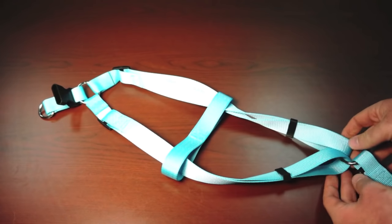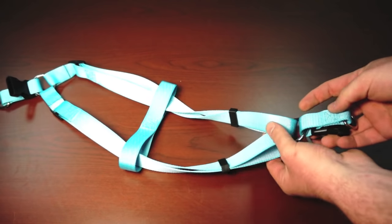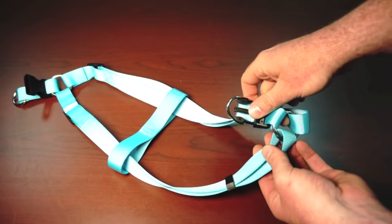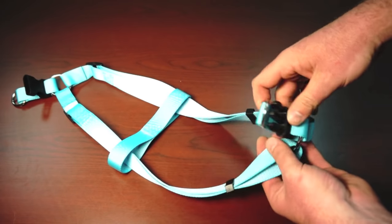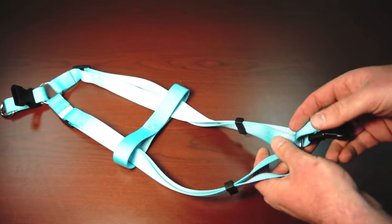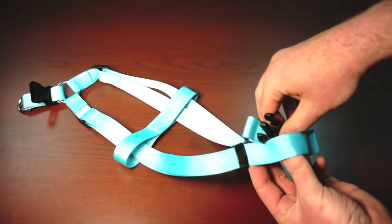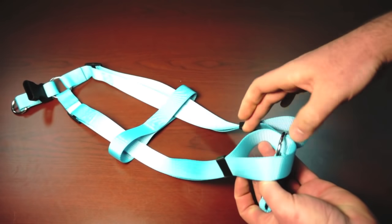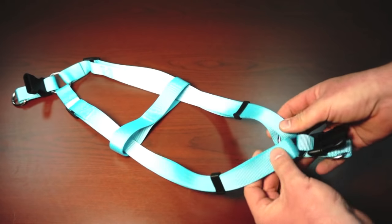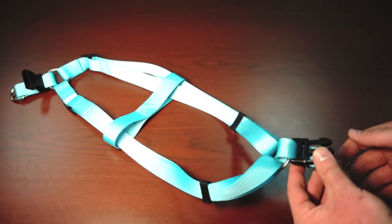So the way that you would then fix this issue is to take the buckle, and you want to pass it back through this loop, like so, and then the buckle's untwisted.